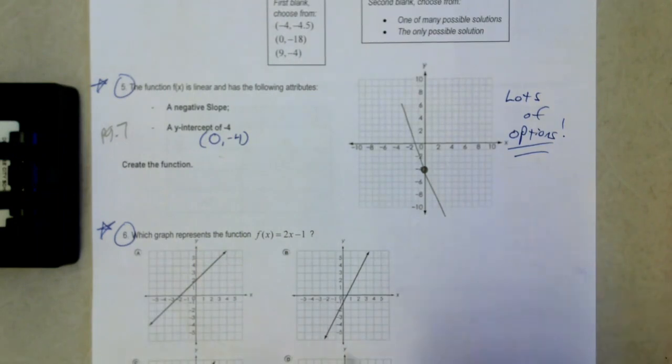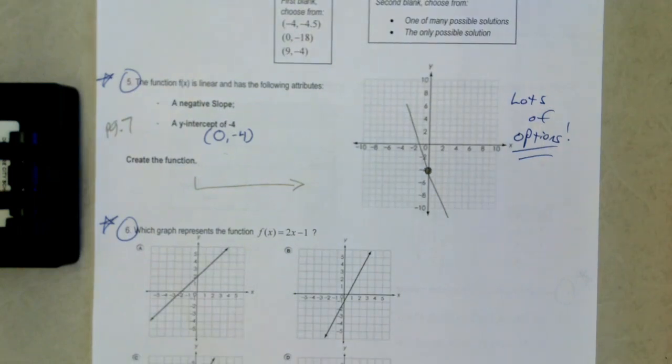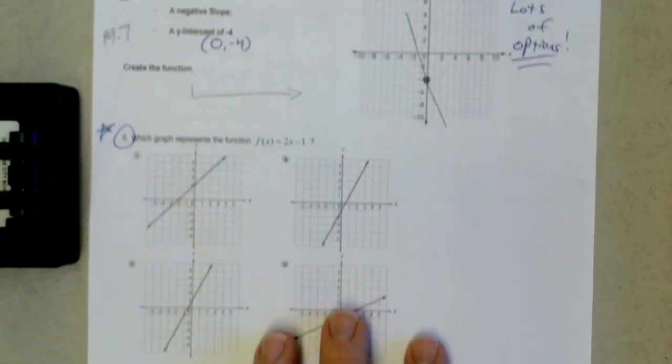So create the function. Guess what? We just did. Negative slope, y-intercept of negative 4. Okay. Next one.